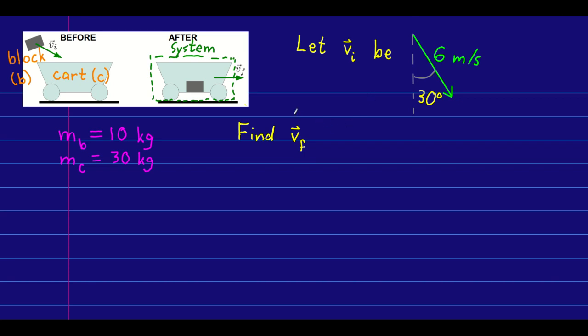Let's first start by thinking about whether our system, which is the cart plus the block, is isolated. And hopefully you see, after a little bit of thought, that it cannot possibly be isolated. And here is why.